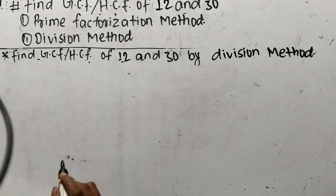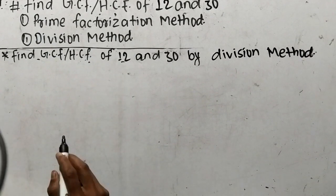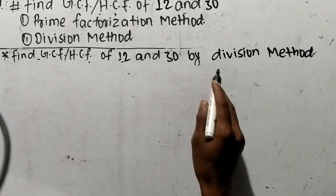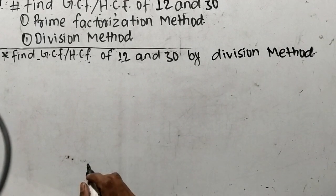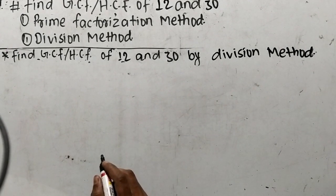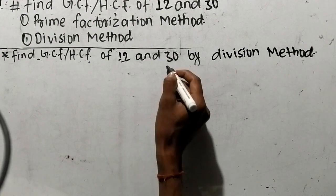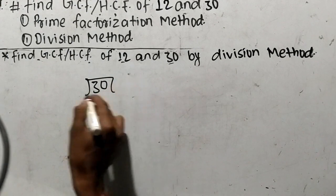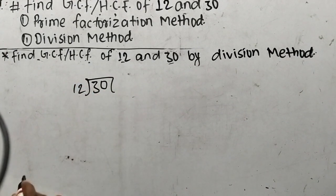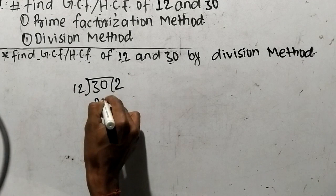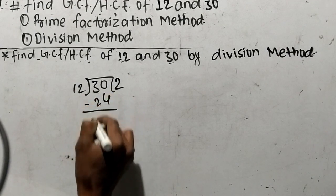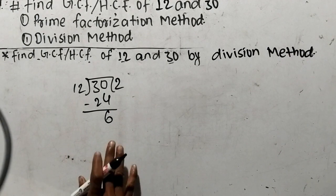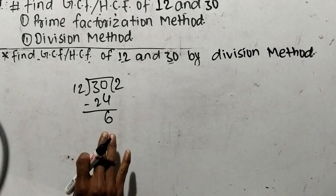Our second method is the division method. Let's find out GCF or HCF of 12 and 30 by division method. While finding out GCF or HCF by division method, first we have to divide the greater number, which is 30, with the lesser number, which is 12. So 12 times 2 means 24, and 30 minus 24 means we have a remainder of 6.